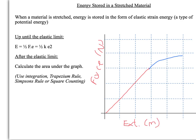Up to the elastic limit, or the limit of proportionality, the graph forms a nice triangle, so the energy can be expressed with the equation: energy equals half k e squared. This is for a spring where f equals k e — you've just substituted that in to get the area of the triangle, which is half base times height.